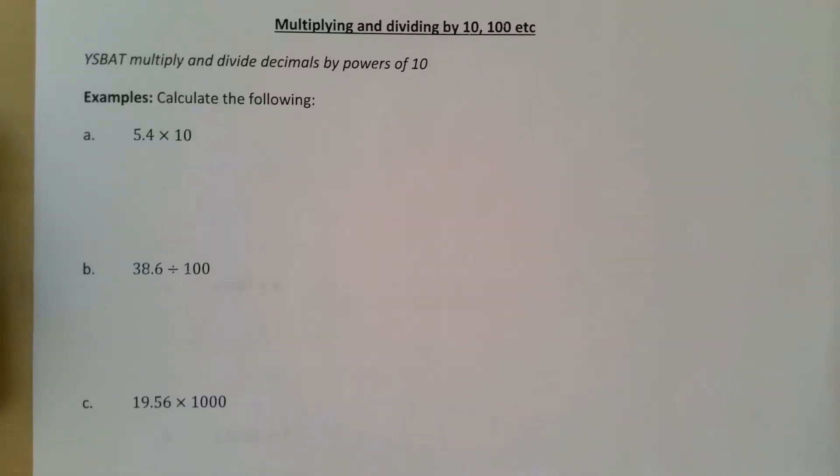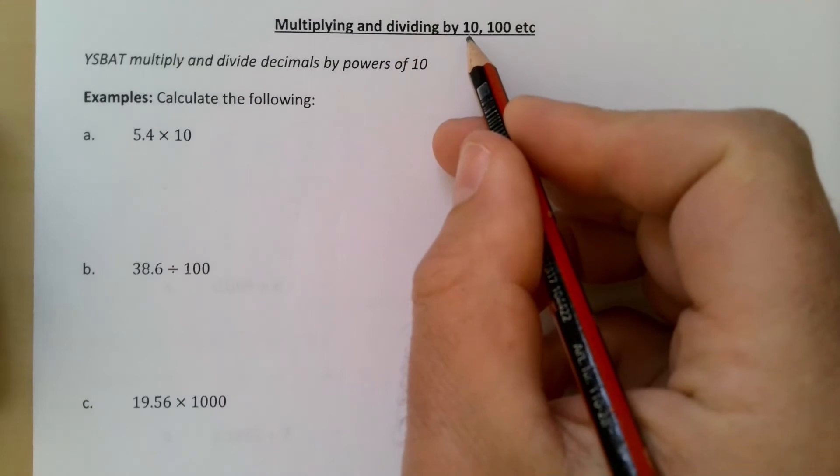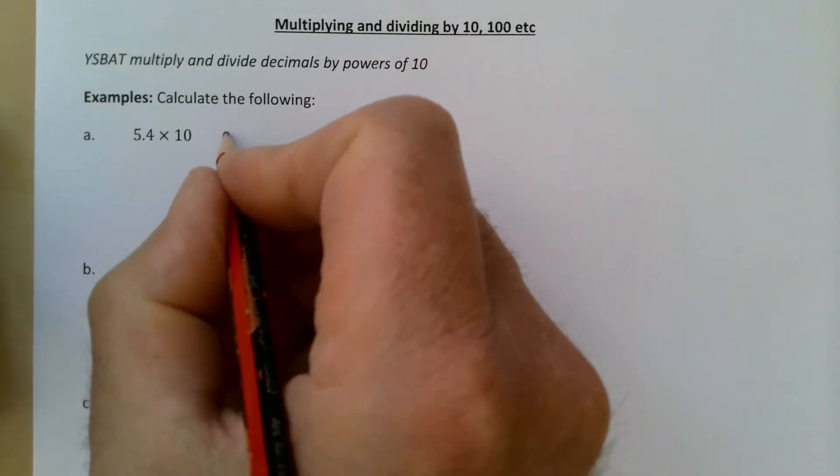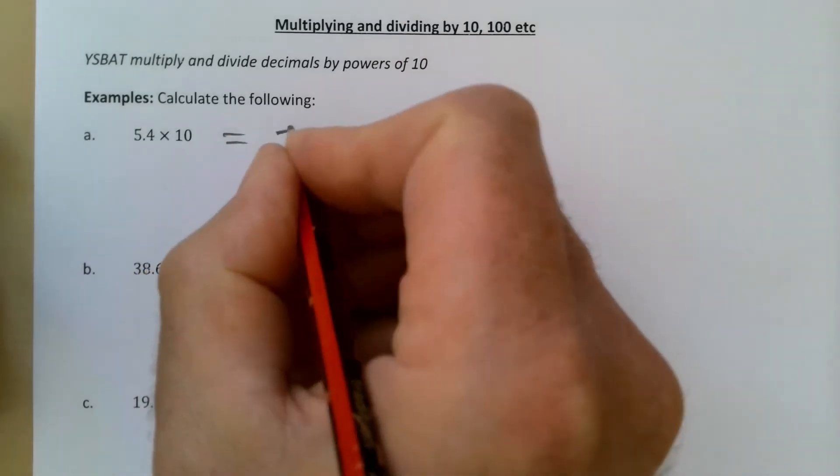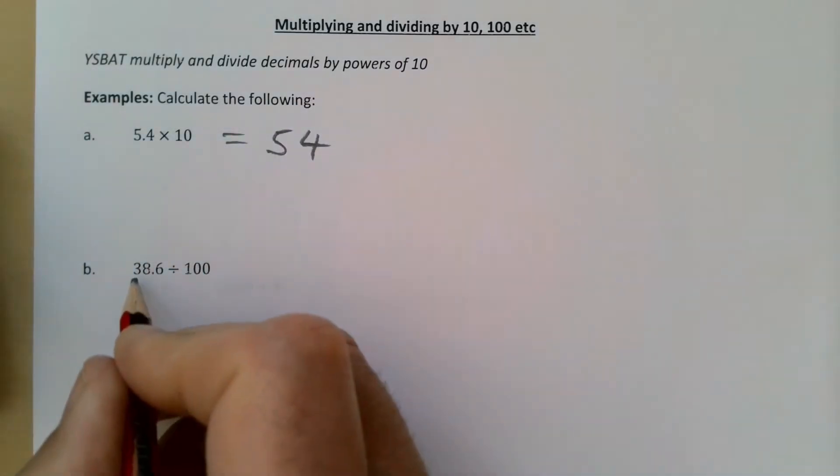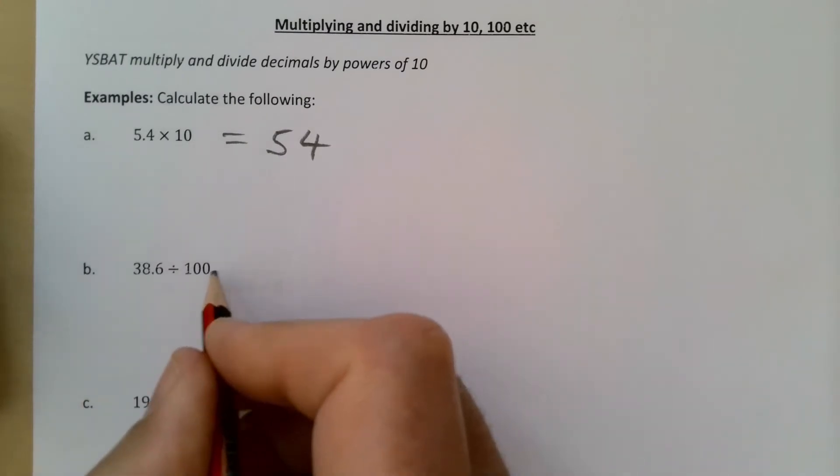Okay, just a very short video on multiplying and dividing by 10 or 100, etc. 5.4 times by 10 - not too much required there, it's just going to give us 54. And then 38.6 divided by 100, so we